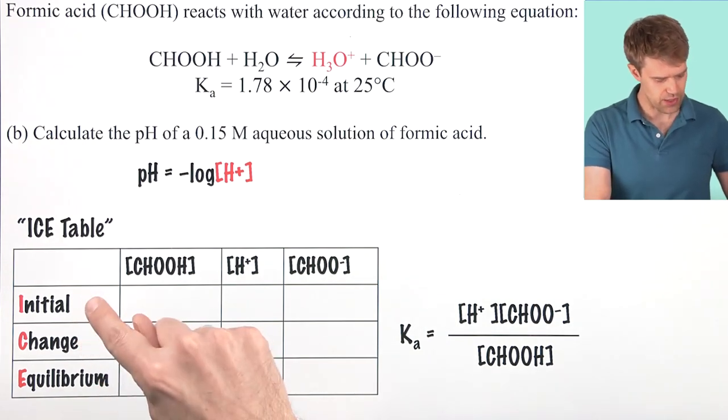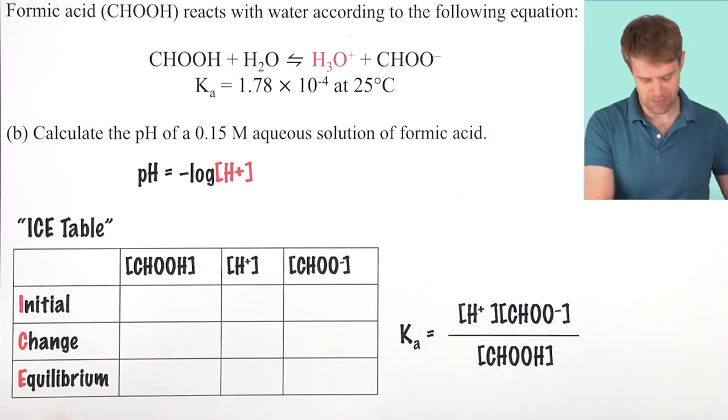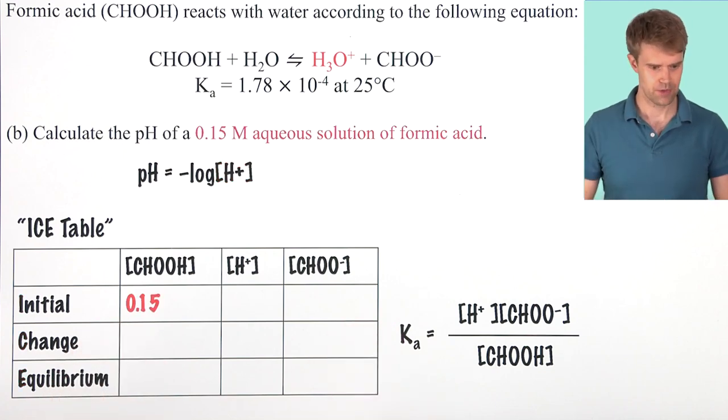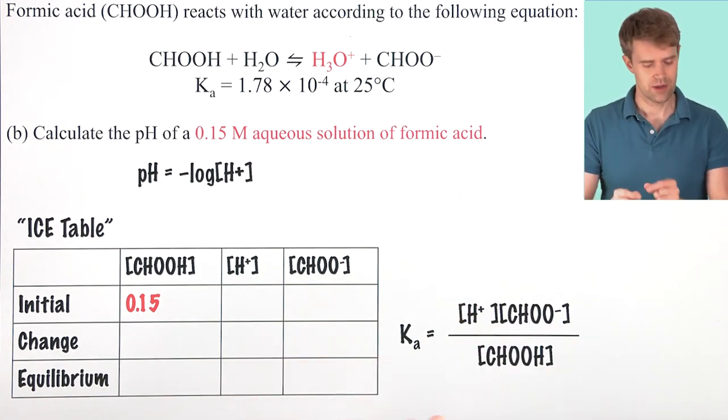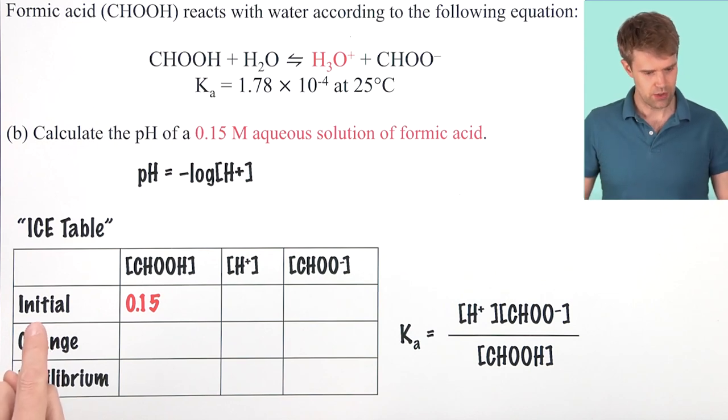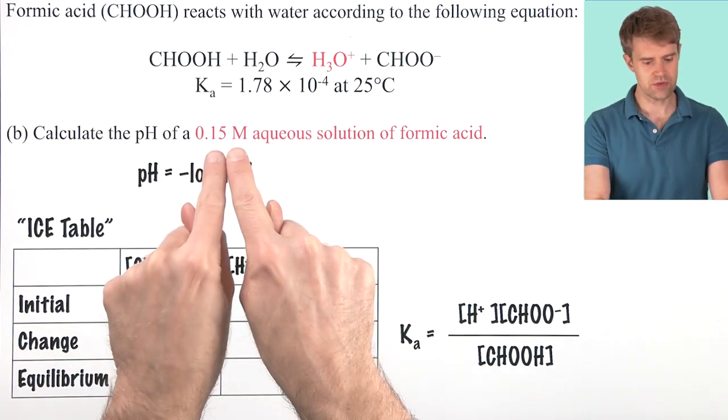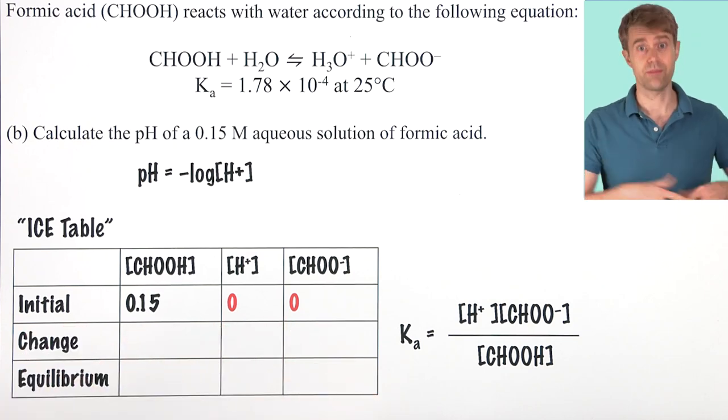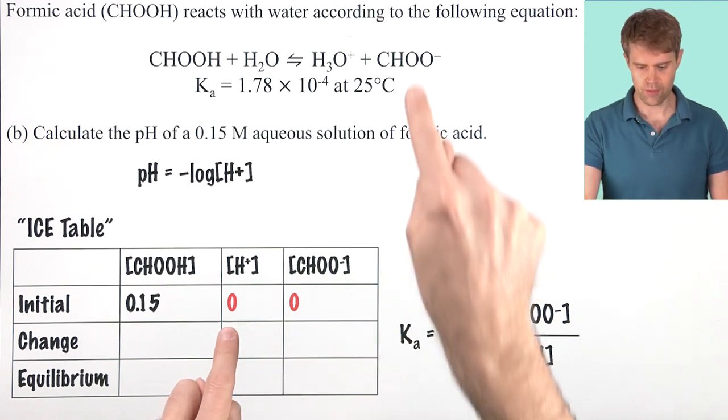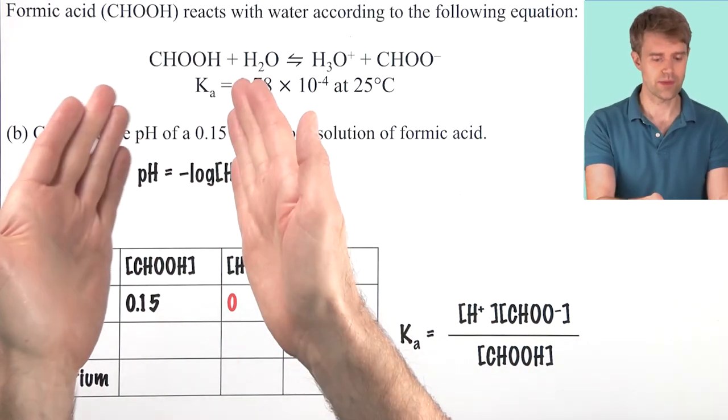ICE stands for initial, change, and equilibrium. The AP exam loves ICE tables. So, make sure you understand the manipulations that we're going to be doing here. When we set up a table like this, we can then start putting in the different entries here. We'll start with the initial concentrations. First, the initial concentration of formic acid. Well, that's given to us in the problem, 0.15 molar. Now, we assume that before we reach equilibrium, initially, H-plus and formate are going to be zero. Because we're starting just with the formic acid on the left side.